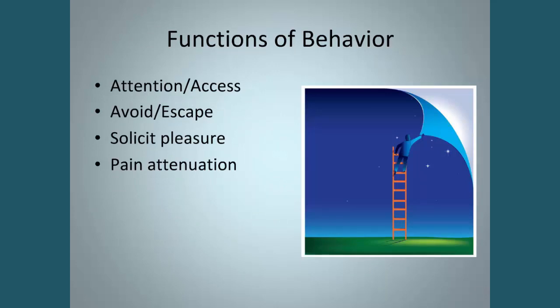Our first job is to figure out the functions of that behavior. Here are four functions of behavior: attention or access, avoid, and escape. In several studies by Pat Miranda, she looked at the functions of behavior in children who had moderate to severe disabilities, and she found that much of their aggressive or self-injurious behavior was for avoidance or escape. So that's a function we really need to pay attention to.